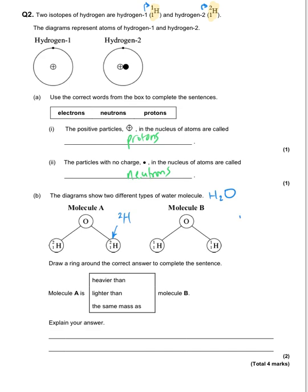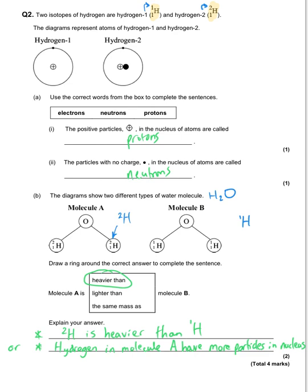The one on the right has two atoms of hydrogen with a relative atomic mass of one. The question asks: is molecule A heavier than, lighter than, or the same mass as molecule B? Because molecule A has two atoms of heavy hydrogen, it will be heavier than molecule B. The answer could be: hydrogen-2 is heavier than hydrogen-1, the hydrogen atoms are heavier, or the hydrogens in molecule A have a larger nuclear mass. Any of those are fine, but you only need one explanation point — the overall mark is two: one for the comparison and one for the explanation.